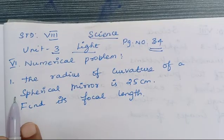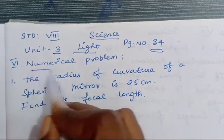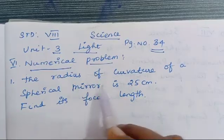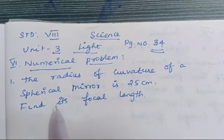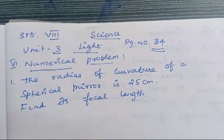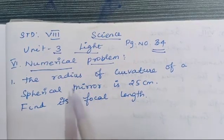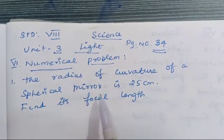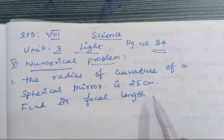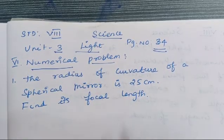So first let me move on to the first problem. The radius of curvature of a spherical mirror is 25 cm. Find its focal length.